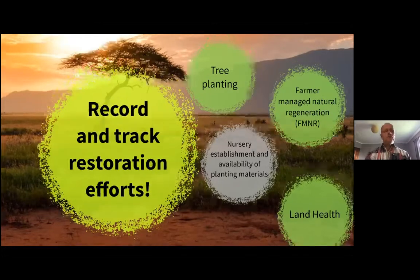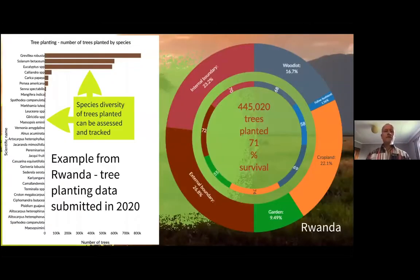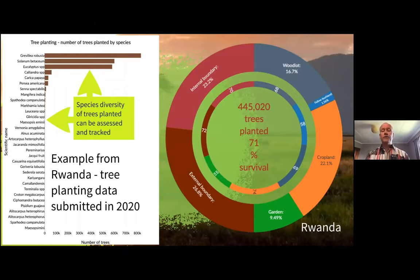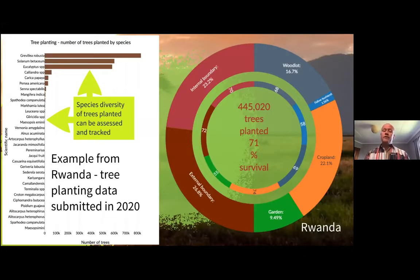In the tree planting module, users can record trees that they're planting in farmer fields. From this we can look at what types of trees are being planted, determine the diversity of trees planted, and look at the performance of tree planting, which is really important. This example is from Rwanda, where with data submitted in 2020 alone — just the last few months — we have almost half a million trees planted as part of the Regreening Africa project, which is funded by the EU. In the app we can also calculate survival rates.